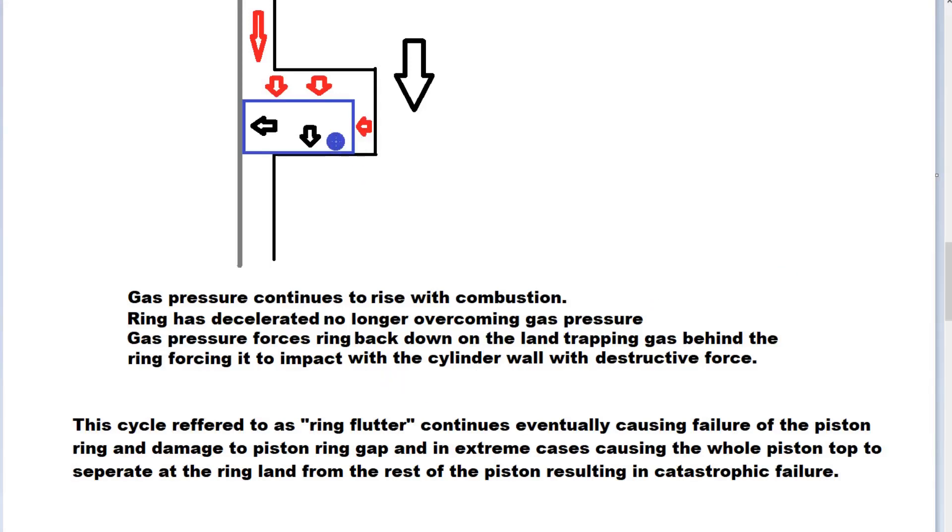What can we do to alleviate this? One of the things is we could have thinner rings, a smaller ring. The problem with decreasing the size of the piston ring to make it lighter so that it's not as prone to jumping off the top is that we'll have a very thin contact patch on the cylinder wall.